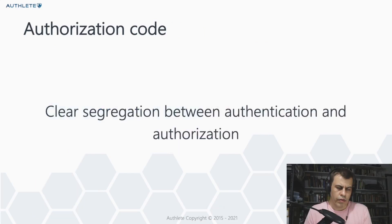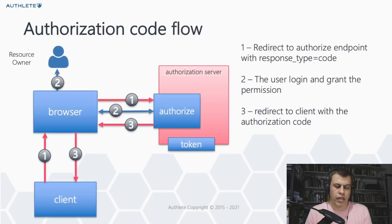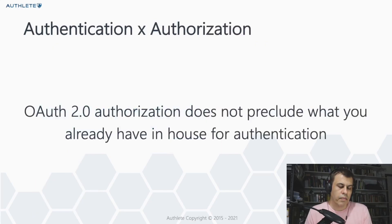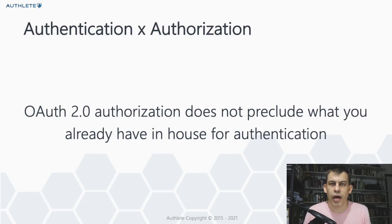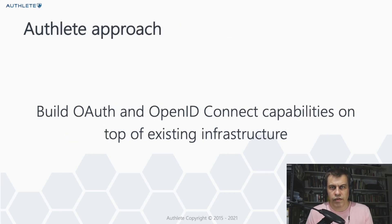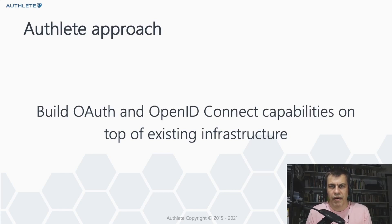Another aspect is the clear segregation between authentication and authorization. Looking at the flow, requests one and three are related to the authorization process, while authentication is only involved in the second step — just between the browser and the authorization server, with the client not involved at all. This means implementing OAuth2 authorization does not preclude what you've already invested in authentication, state management, and identity verification. This principle is the foundation of the Autoly platform design, which allows you to build all OAuth and OpenID Connect features, as well as FAPI profiles and others, on top of your existing infrastructure without redoing anything.